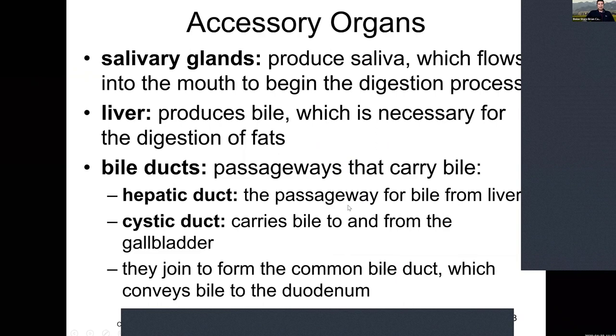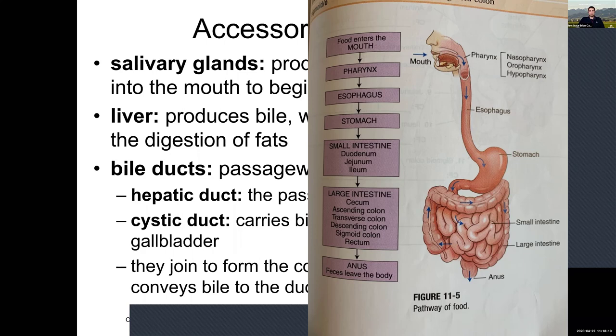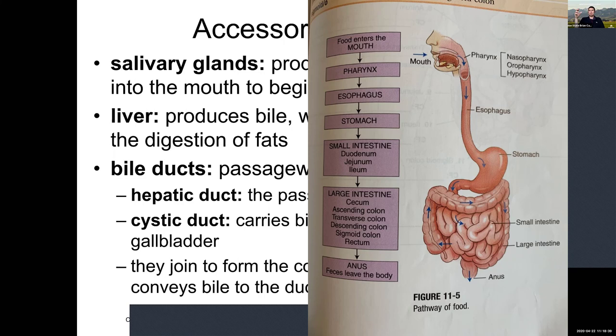Food dumps from the small intestine into the colon just above the appendix, travels up the ascending colon, across the transverse colon, down the descending colon, into the sigmoid colon, then the rectum and anus. Page 461 gives a walkthrough with arrows showing how food travels: mouth, pharynx, esophagus, stomach, small intestine, large intestine, anus.